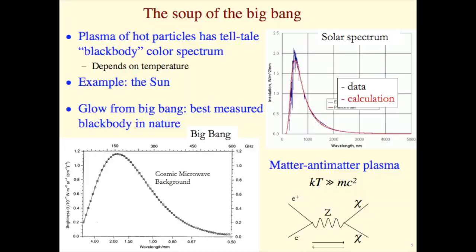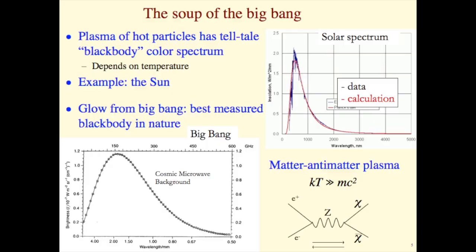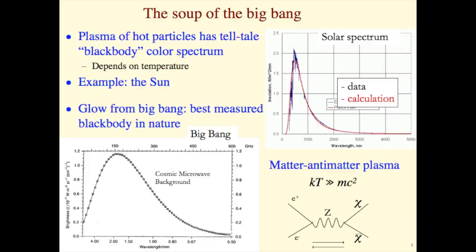But at early times in the universe, if the average energy of things — measured basically by temperature, so kT, where k is a constant — is larger than Einstein's matter-energy equivalent mc², that mass times speed-of-light-squared energy, then you can spontaneously create matter-antimatter particle pairs. So the early universe was a soup of, at really high temperature, all sorts of matter-antimatter particle pairs.